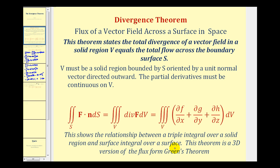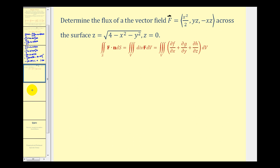Let's take a look at our second example. We want to determine the flux of the given vector field across the surface Z equals the square root of four minus X squared minus Y squared and Z equals zero. Before we do this, let's take a look at it graphically.